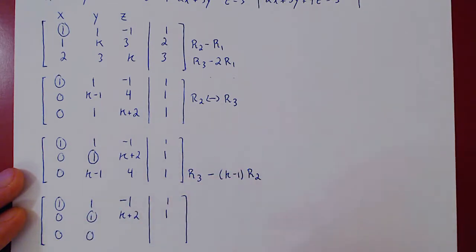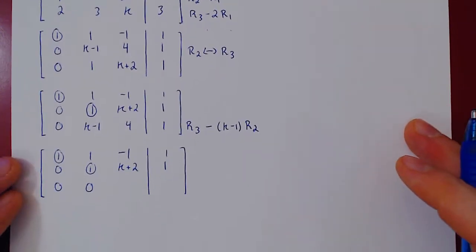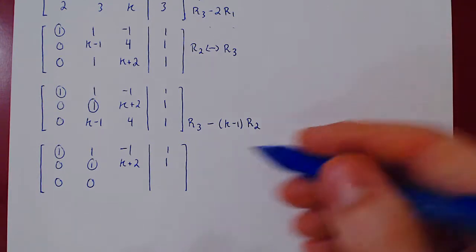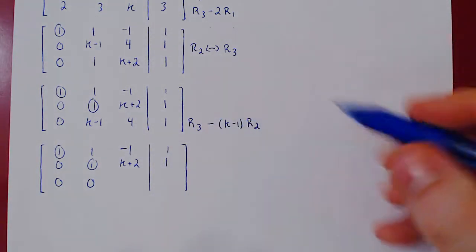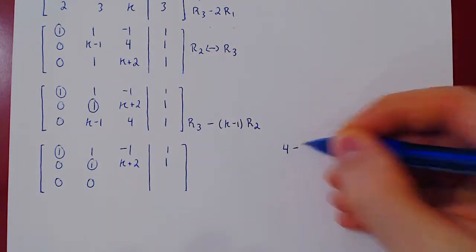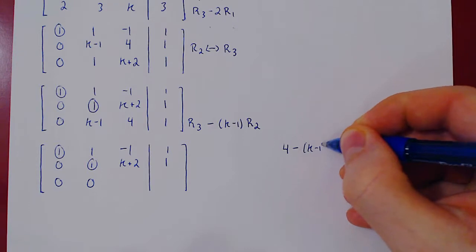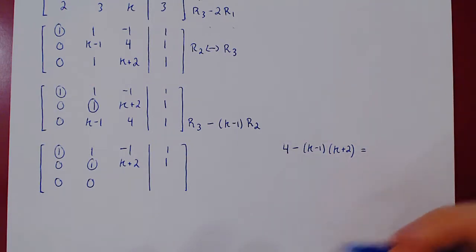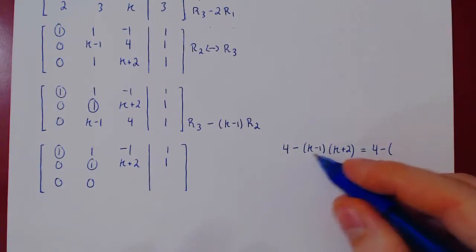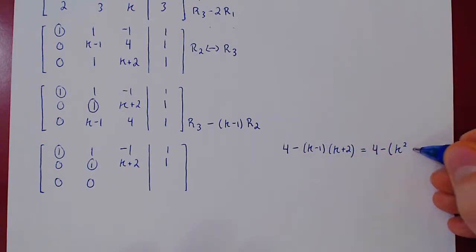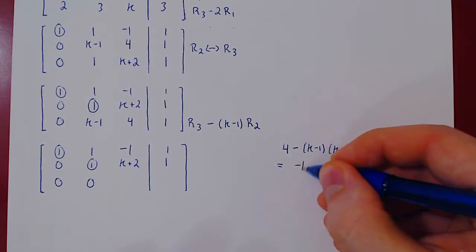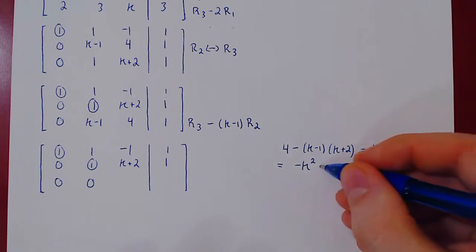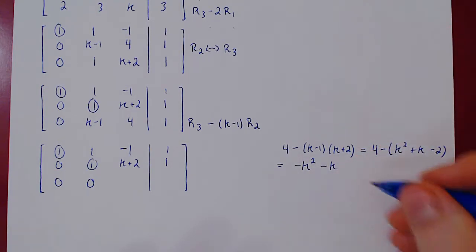We'll get zero, zero, and here let's perform these two last entries on the right-hand side. So we have four minus, let's do it here, four minus k minus one times k plus two. Let's multiply this out. Four minus k squared plus two k minus k minus two. Let's distribute. We'll have negative k squared, negative k. Four minus negative two is four plus two, positive six.